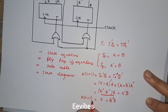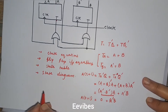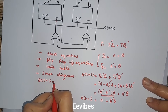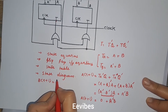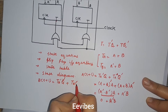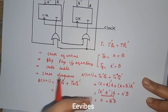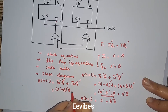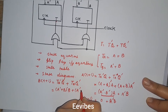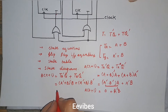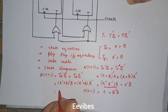Similarly, deriving the second flip-flop: B(t+1) = T_B' · Q + T_B · Q'. In this case T_B = A' + B, and Q = B, Q' = B'. So the expression becomes (A' + B)' · B + (A' + B) · B'. Let's simplify further by applying De Morgan's theorem.